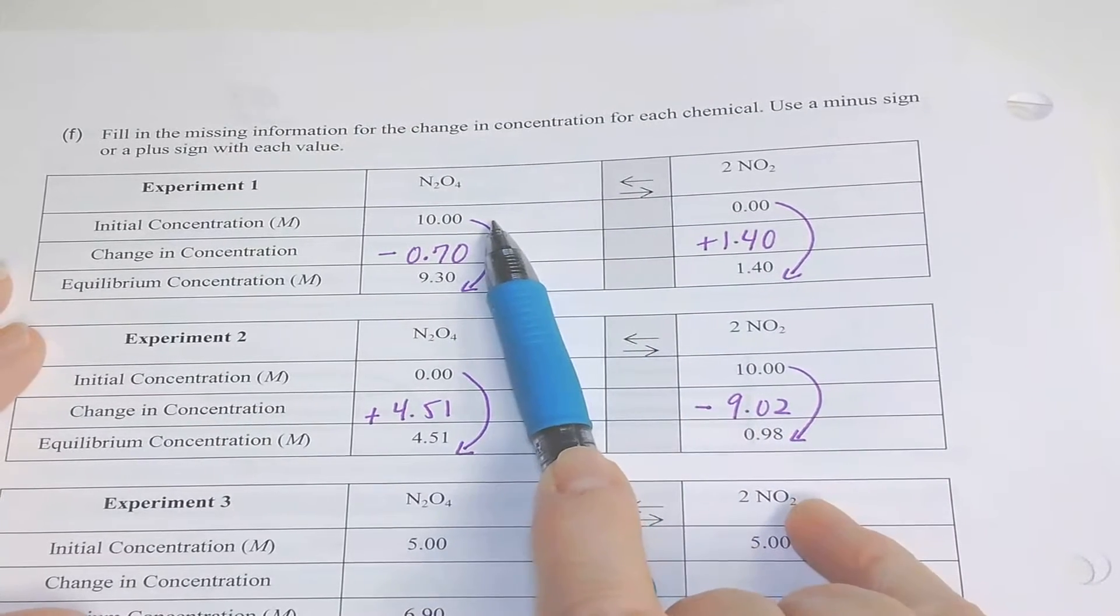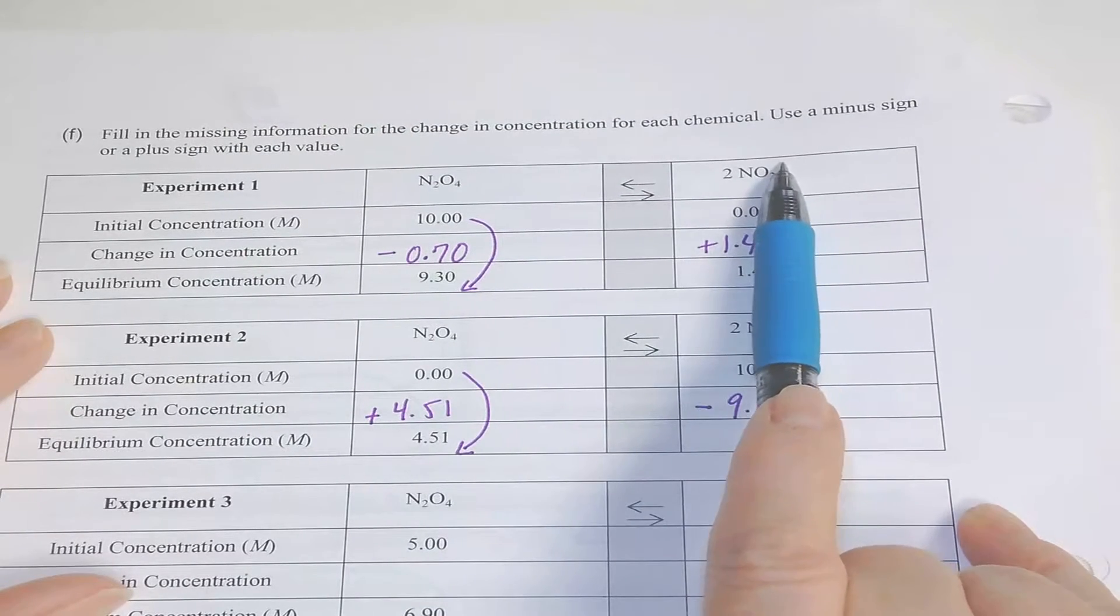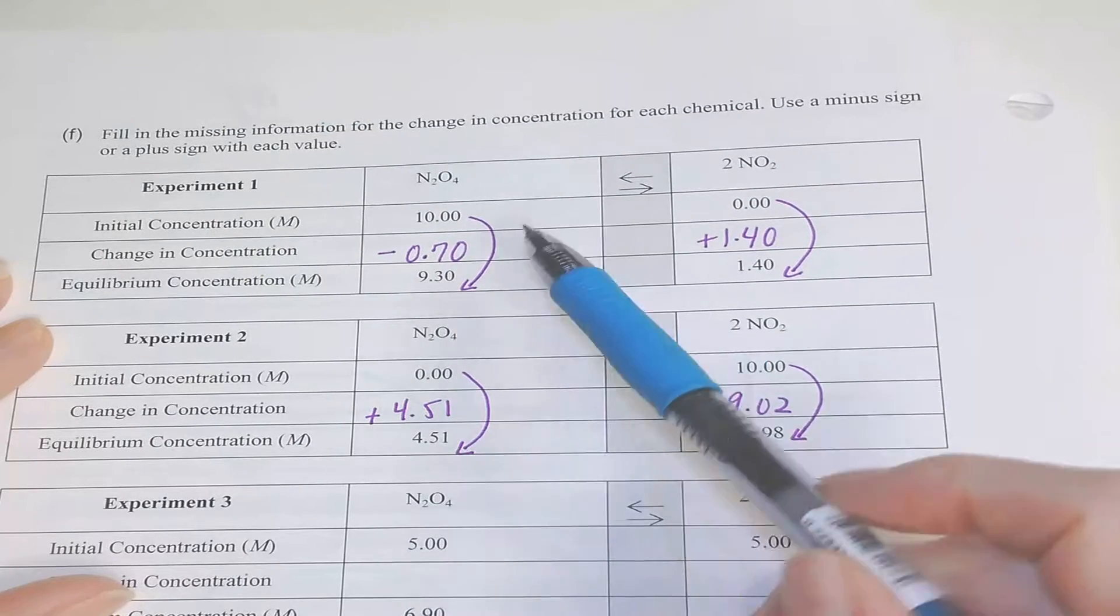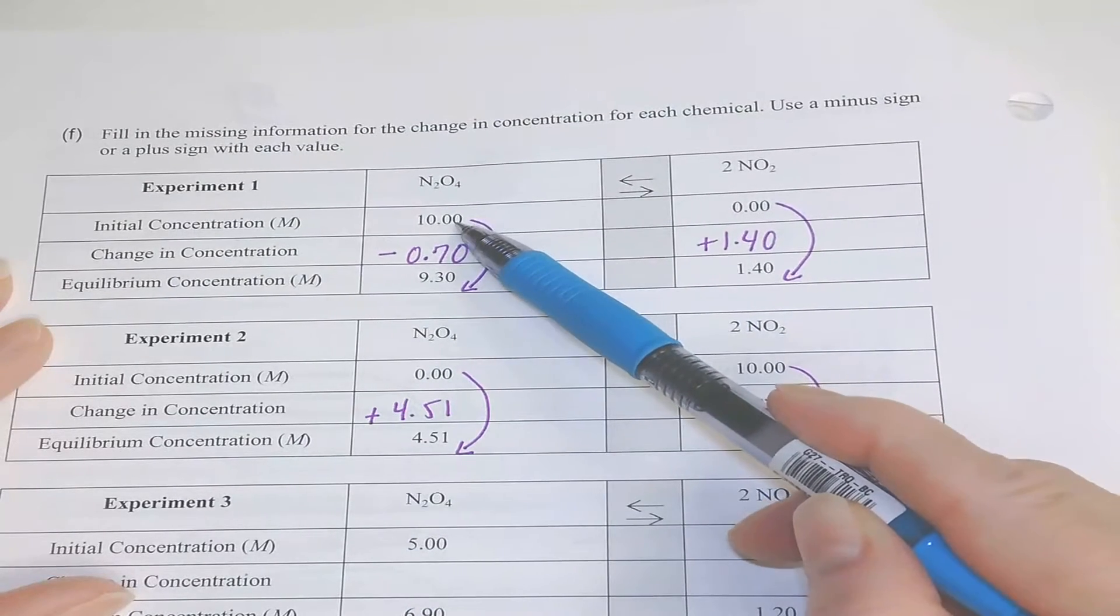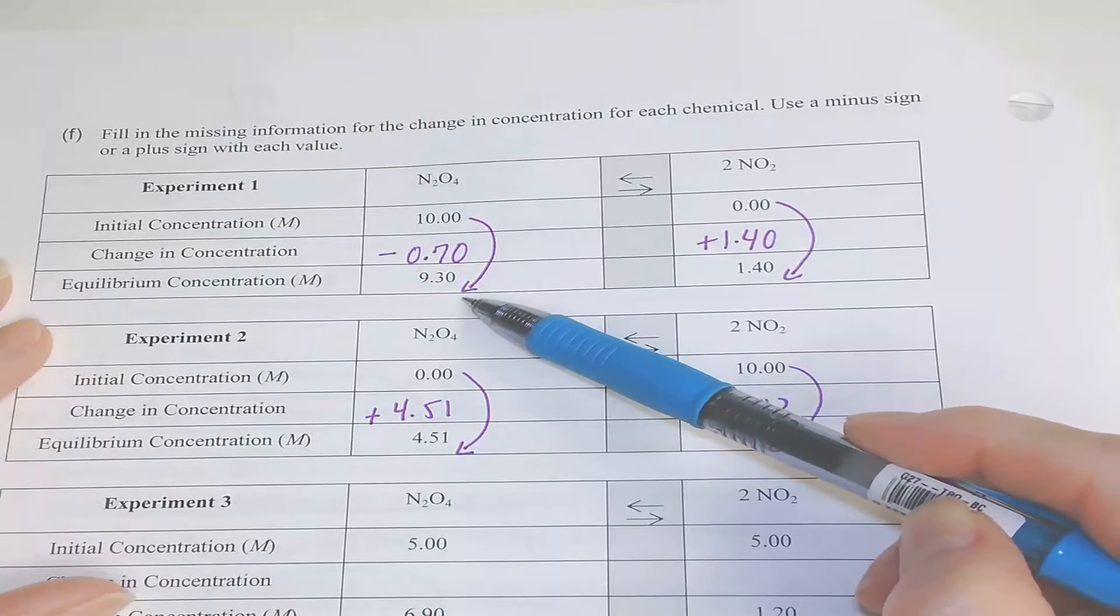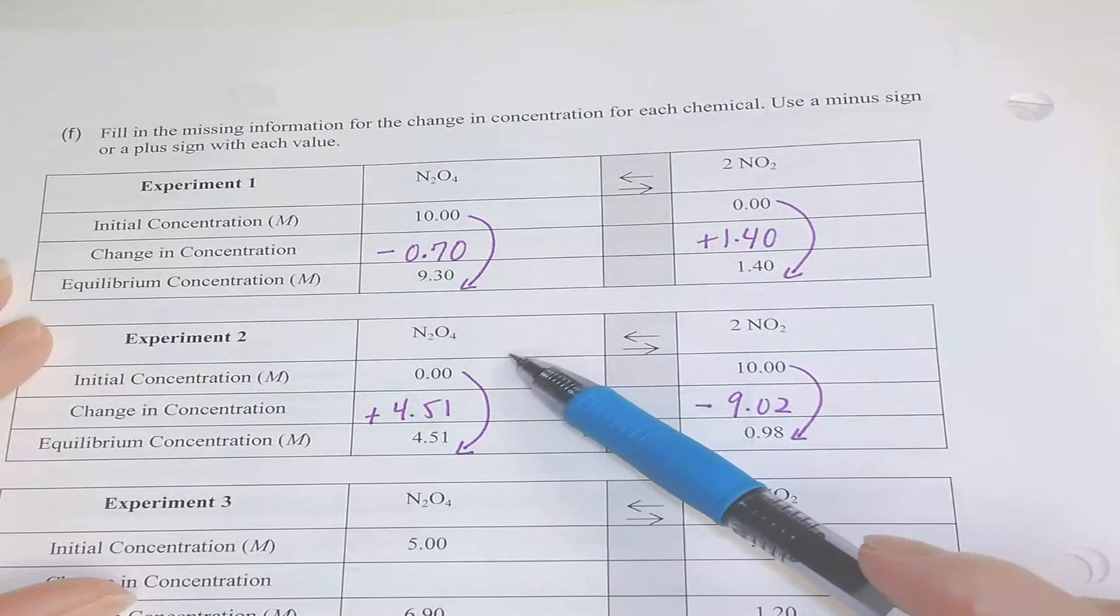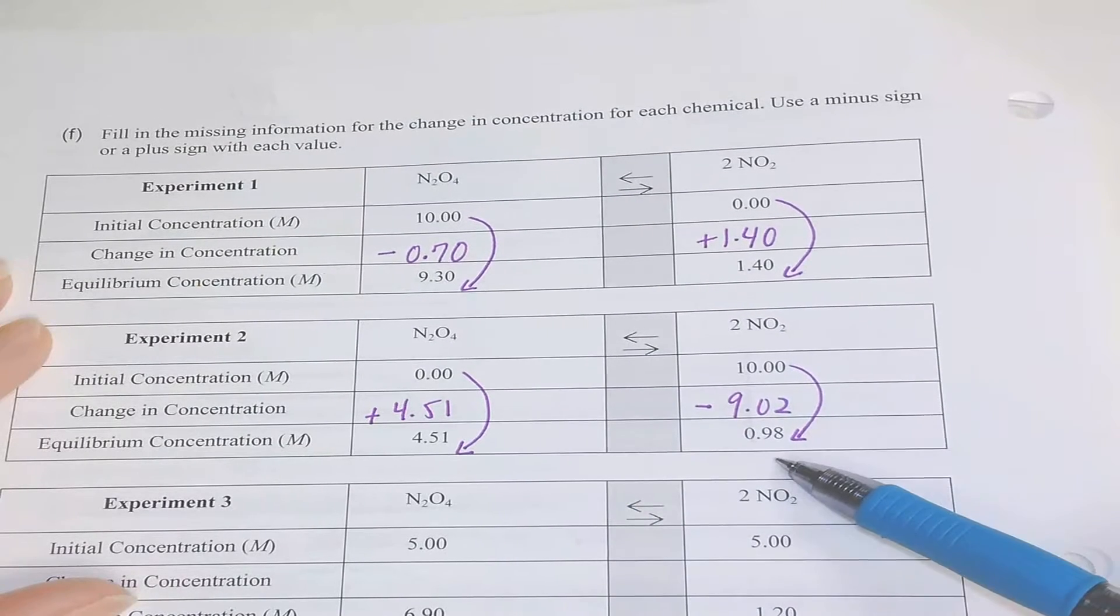We've got the initial concentrations of both reactants and products and the final concentration. Looking at where we started and where we ended, we can find the change in concentration under each of these scenarios.